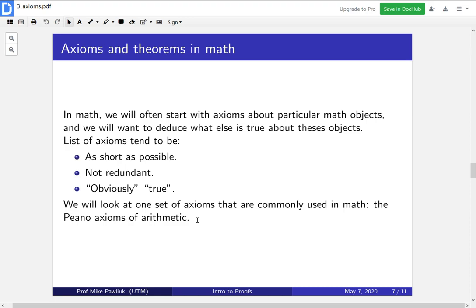So in math, we will often start with axioms about particular math objects, and we will want to deduce what else is true about these objects. So we're going to have lists of rules or lists of things that are definitely true. And we're going to see what else can we conclude about them. We'll see an example about this in a moment. But let me just say that the list of axioms we use, depending on the context, they tend to be quite short, they're made as short as possible. They try not to include redundant rules. So each rule is useful and unique. You don't include any extra information. And in some sense, axioms should be, in scare quotes, obvious, and they should be, in scare quotes, true.